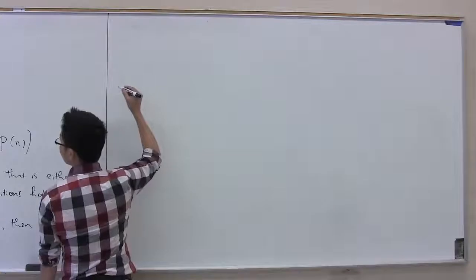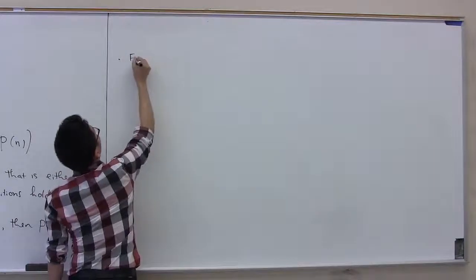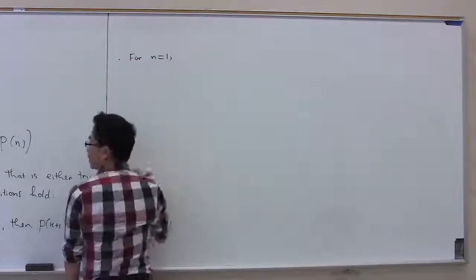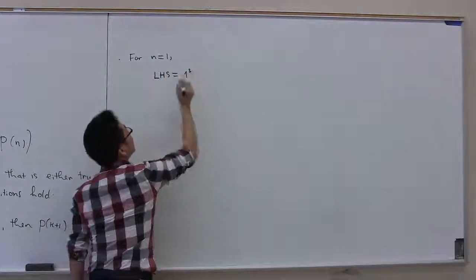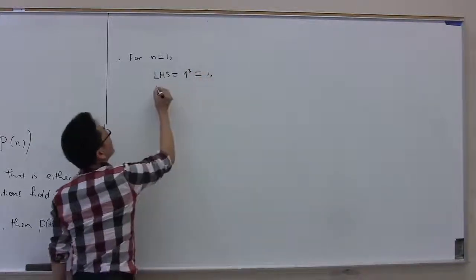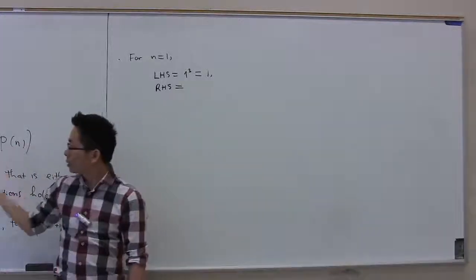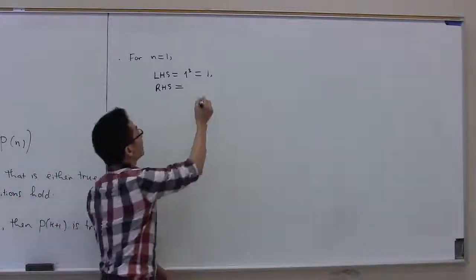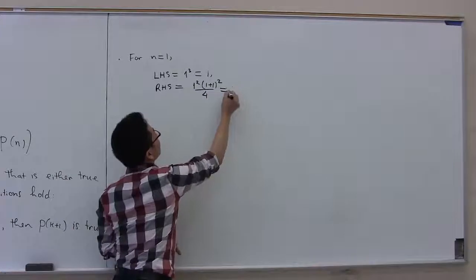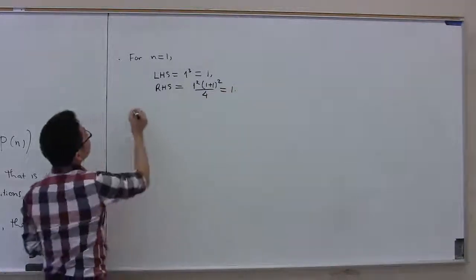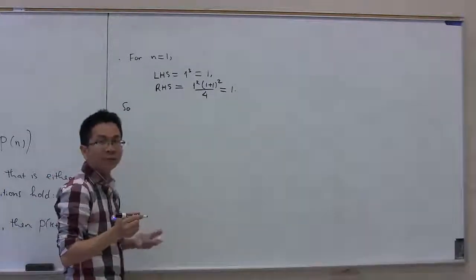So let's start with the base case — that is the case where n is equal to 1. For n equals 1, the left-hand side is 1 to the third, which is 1. The right-hand side is 1 squared times (1 plus 1) squared over 4, and that is also 1. Therefore the identity is satisfied when n is equal to 1.